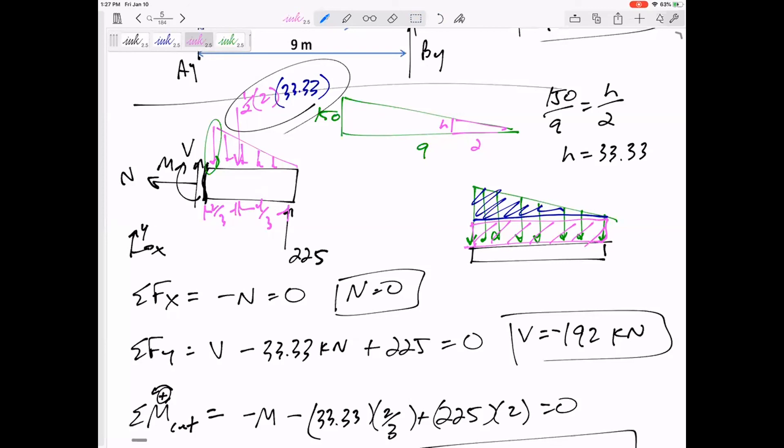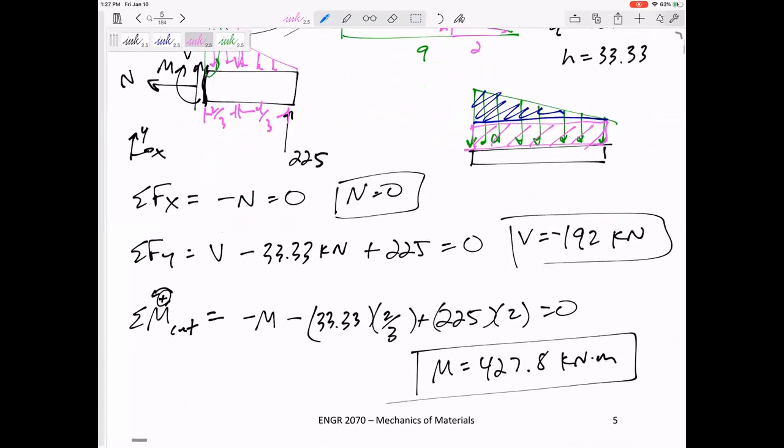All right. So we cut it, throw away one half, draw N, V, and M in positive sign convention, solve for N, V, and M, leave them positive or negative, whatever the math comes out, leave them the way they are, box in, and those are your answers. And if we had cut this and looked at the other half, we would have gotten N is equal to zero, we would have gotten V is negative 192, and we've gotten M is positive 427.